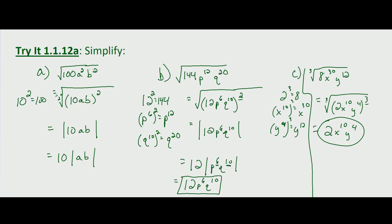To summarize: the square root of 100a²b² simplifies to 10 times the absolute value of ab — we need that absolute value because it's an even index and the variables themselves are raised to an odd power (the first power). The square root of 144p¹²q²⁰ simplifies to 12 p to the 6th q to the 10th with no absolute value needed, since all parts are already known to be positive. The cube root of 8x³⁰y¹² simplifies to 2x to the 10th y to the 4th — it's a cube root, so no absolute value is needed.